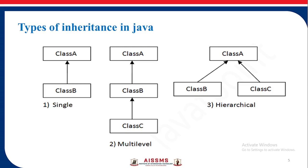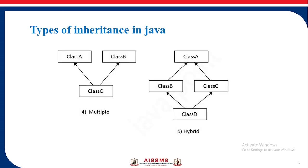The types of inheritance in Java are: single, multilevel, and hierarchical. In single inheritance, class B extends the properties of class A. In multilevel, class C inherits the properties of class B, which in turn inherits the properties of class A. In hierarchical inheritance, class B and class C both inherit the properties of class A. Multiple inheritance, where class C inherits the properties of class B and class A, is not possible in terms of classes in Java because it leads to the diamond ambiguity problem. In hybrid inheritance, class B extends class A, class C inherits class A, and class D inherits the properties of both class B and class C.